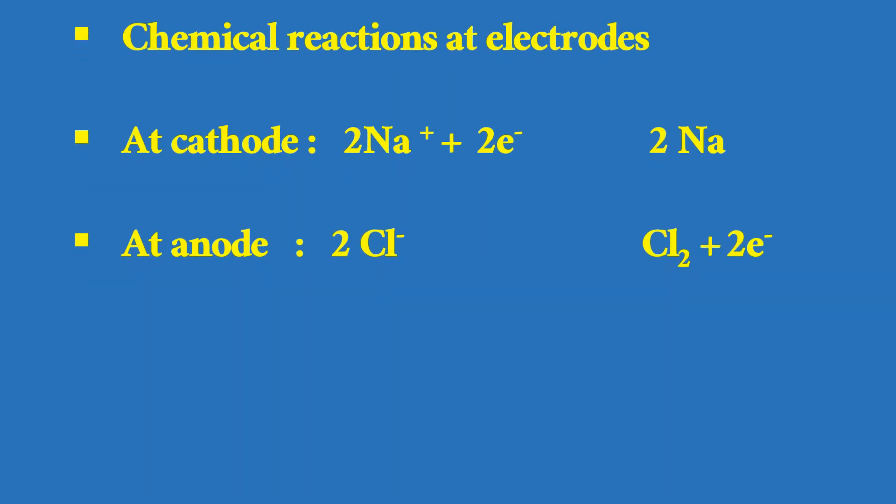Chemical reactions at the electrodes: At the cathode, sodium ions gain electrons and are converted to sodium metal. At the anode, chloride ions lose electrons and are converted to chlorine gas.